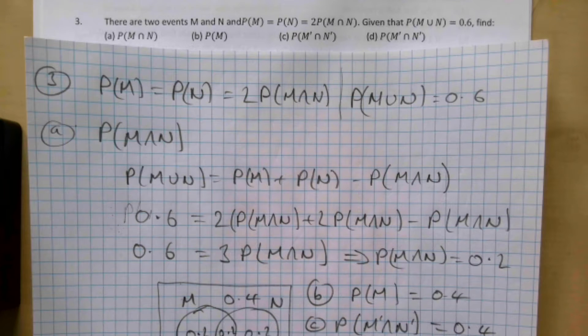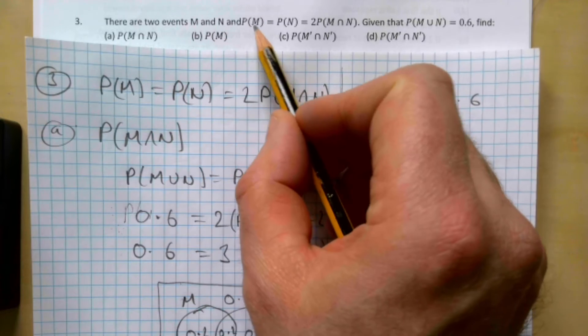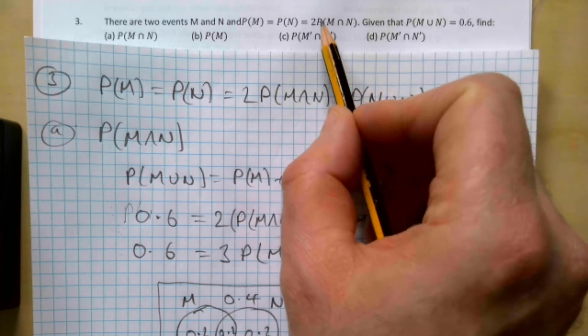This is AS Stats, we are on Exercise 4, part of probability, and this is question 3. Question 3 says there are two events M and N. Probability of M is equal to the probability of N, which is